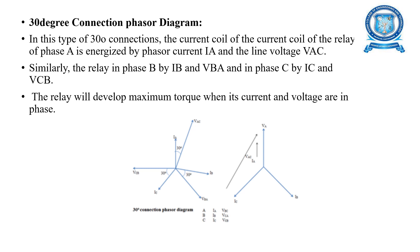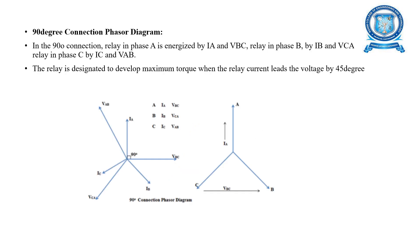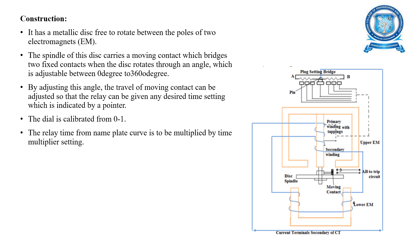Next is the 90-degree connection phasor diagram. Here the relay for phase A is energized by IA and VBC, the relay for phase B by IB and VCA, and the relay for phase C by IC and VAB. This relay is designed to develop maximum torque when the relay current leads the voltage by 45 degrees. This is the diagram for the 90-degree connection phasor diagram.